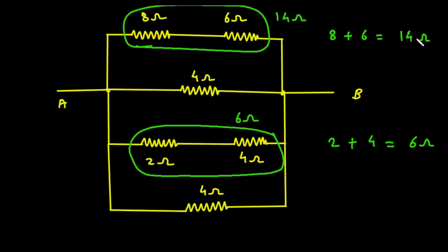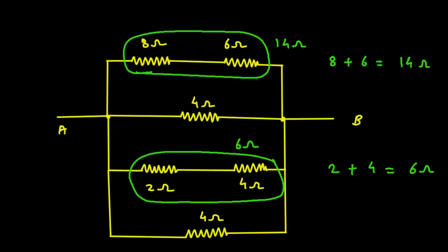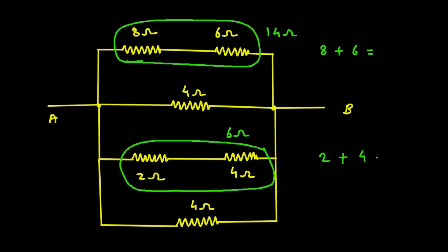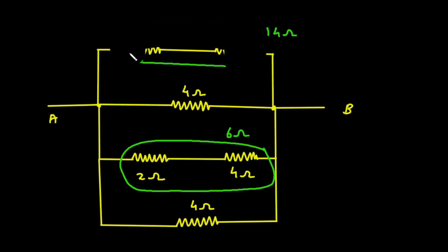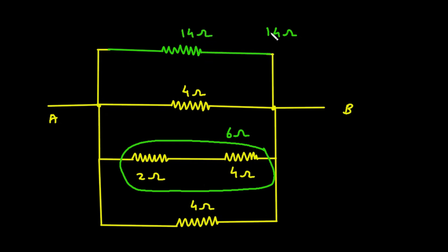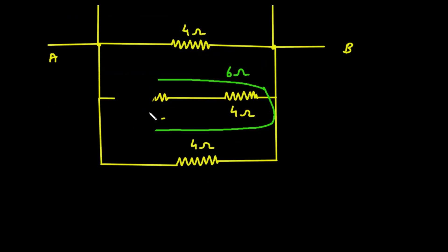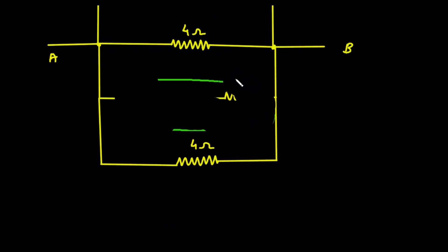Now again we can redraw this network. We replace the series pair of 8 ohm and 6 ohm with a single resistance of 14 ohm, and we replace the series pair of 2 ohm and 4 ohm with a single resistance of 6 ohm.